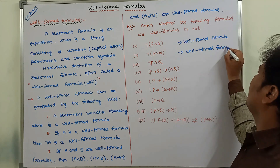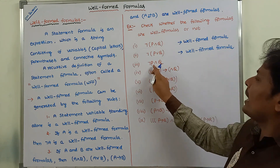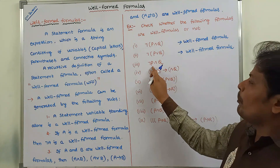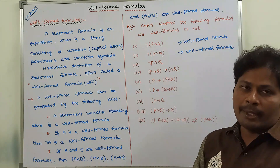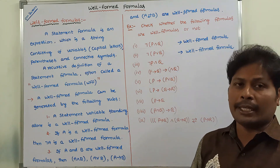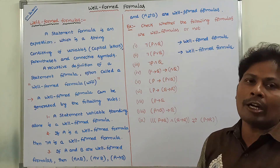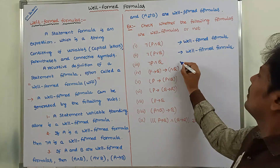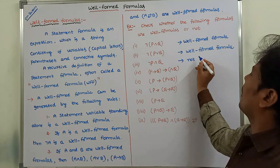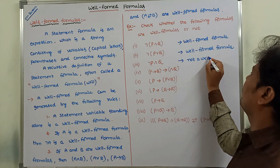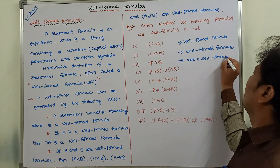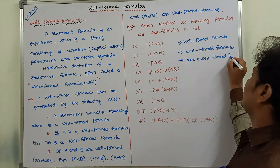Consider the third example: negation P and Q. Here P and Q are statement variables, negation and 'and' are the connectives. But parentheses are not there. So this is not a well-formed formula, because parentheses are missing.